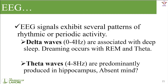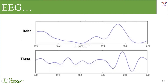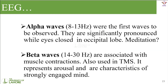Theta waveforms have a frequency of 4 to 8 Hz and are predominantly produced in the hippocampus. They appear when a person is awake but absent-minded — not fully present or engaged. At that point we will get theta waveforms. Alpha waves have a frequency of 8 to 13 Hz and are the first waves to be observed when a person is actively doing something.